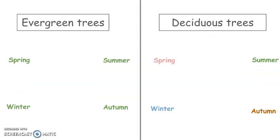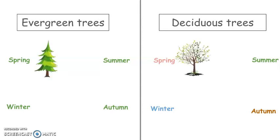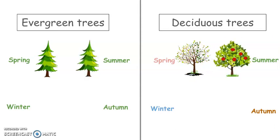First, let's look at these trees in different seasons. In spring, we see that evergreen trees are green, but deciduous trees are growing new leaves and flowers. In summer, we see evergreen trees are green, but deciduous trees are green and they produce fruit and seeds.